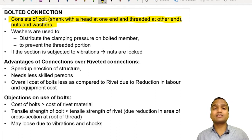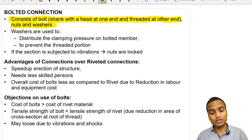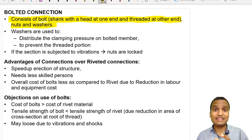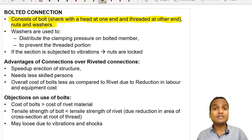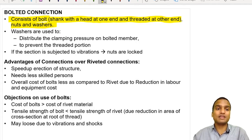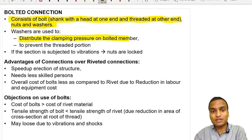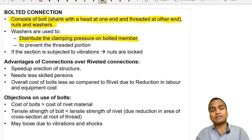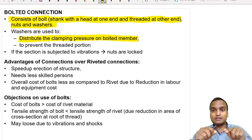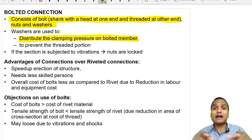Along with nuts and bolts, what is the use of washers? Generally, people think washers are used when the diameter of the bolt is less than the diameter of the hole, but this is not the only use. Washers are also used to distribute the clamping pressure on the bolted member over a larger area.